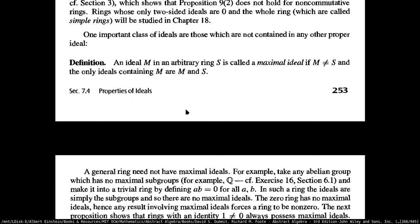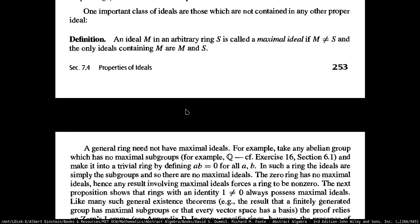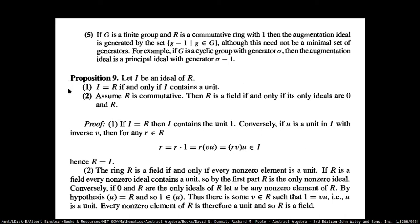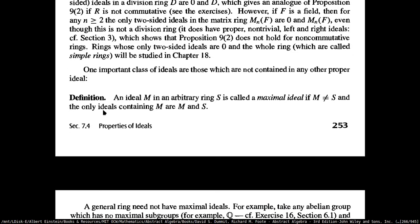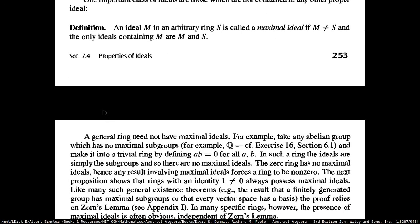We have this important piece — maximal ideals. An ideal M from an arbitrary ring is called a maximal ideal if first of all it is not equal to the ring, and the only ideals containing M are M and R itself. So the only ideals that contain this ideal are the ideal M itself and the ring R itself. This is our special category of ideals.